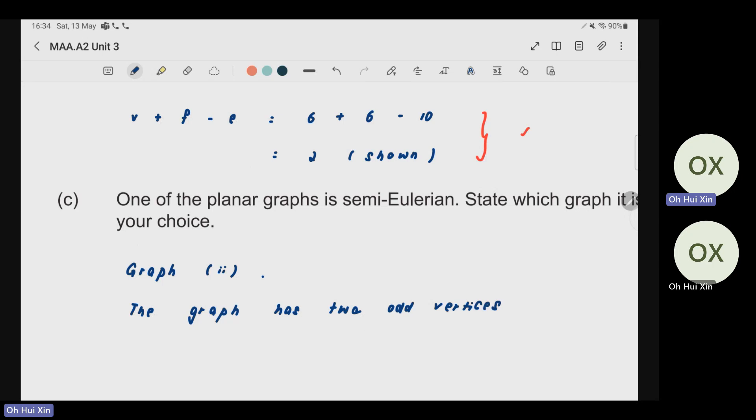So successfully get that graph 2 is a semi-Eulerian and you get one mark. The graph has two odd vertices, then you get one mark. That's it for the first question here.